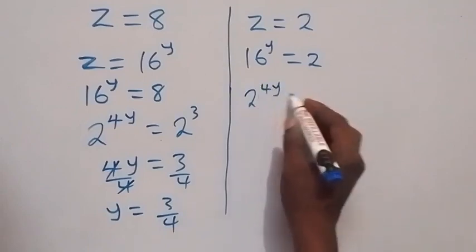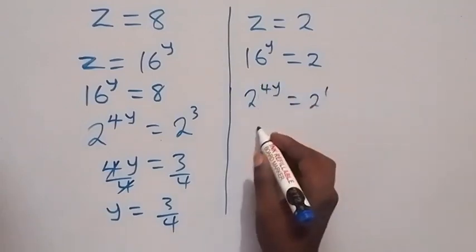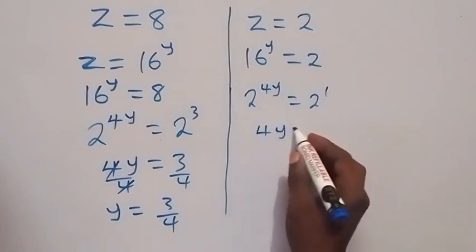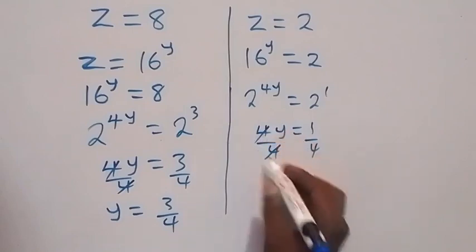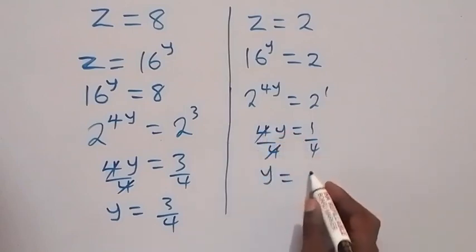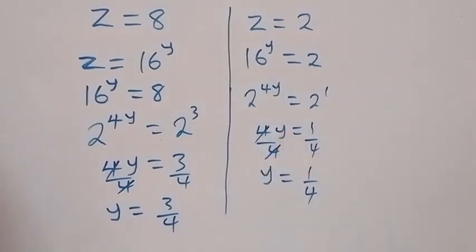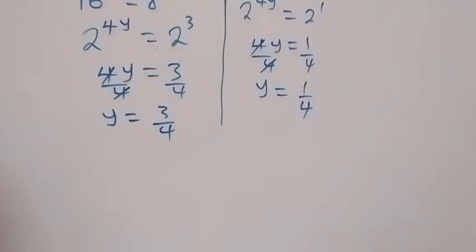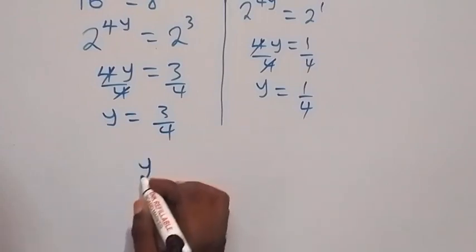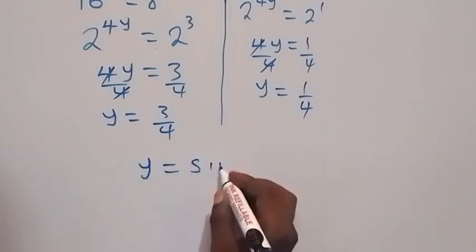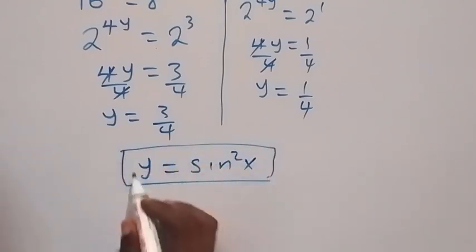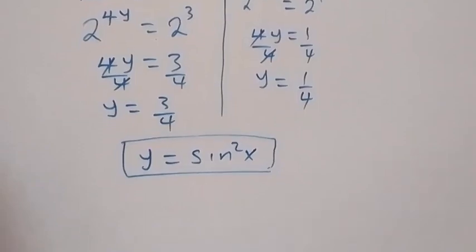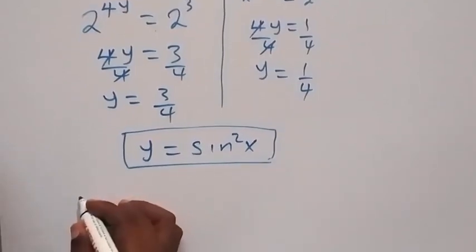For z equals 2: 16 raised to power y equals 2, which is 2 raised to power 4y equals 2 raised to power 1. So 4y equals 1, and dividing both sides by 4 gives y equals 1 over 4. Recall that y equals sine square x.